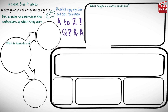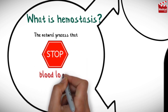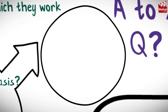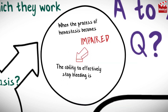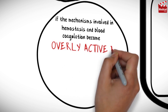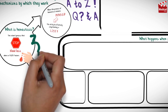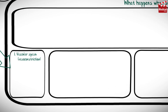What is hemostasis? Hemostasis is the natural process that stops blood loss when an injury occurs. When the process of hemostasis becomes impaired, the ability to effectively stop bleeding is lost. In contrast, if the mechanisms involved in hemostasis and blood coagulation become overly active, unwanted clots may form within the blood vessels or tissues. Hemostasis involves three steps: vascular spasm, platelet plug formation, and coagulation.